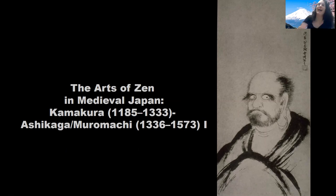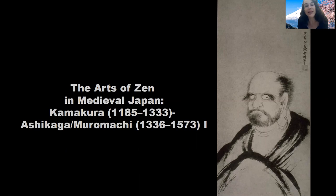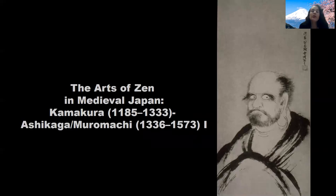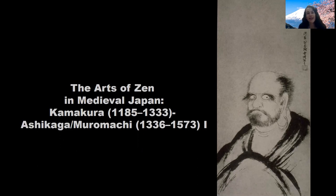Hello, good afternoon — or good morning — as appropriate, wherever you are in the world. Welcome back to Japan's medieval period. Today we will be in the Kamakura era where I left you last class, and we'll be moving on into what's known as the Ashikaga, also known as the Muromachi period, from 1336 to 1573. This is our first of two lectures on Zen art and particularly painting.